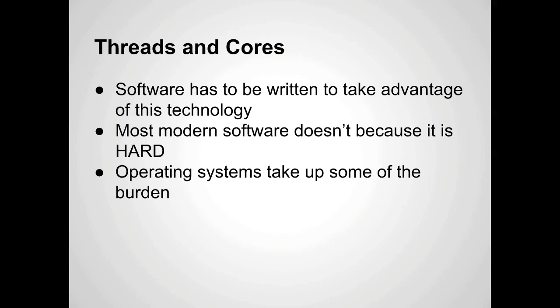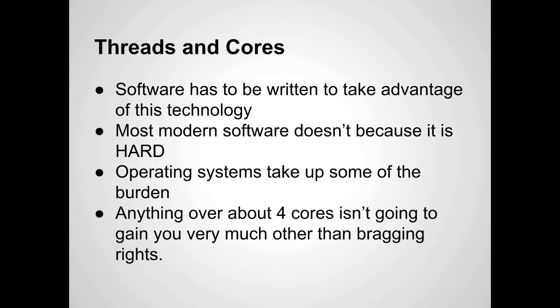Operating systems like Windows and macOS take up some of this burden. Modern operating systems like Windows 8 and macOS do a really good job of making use of this technology. Macs are written to run on Intel processors, so they're more focused on multiple threads, and Windows has to juggle between the two because it doesn't know what system you'll be running it on. Even still, anything over about four cores isn't going to gain you very much other than bragging rights, because most games don't use more than four cores.